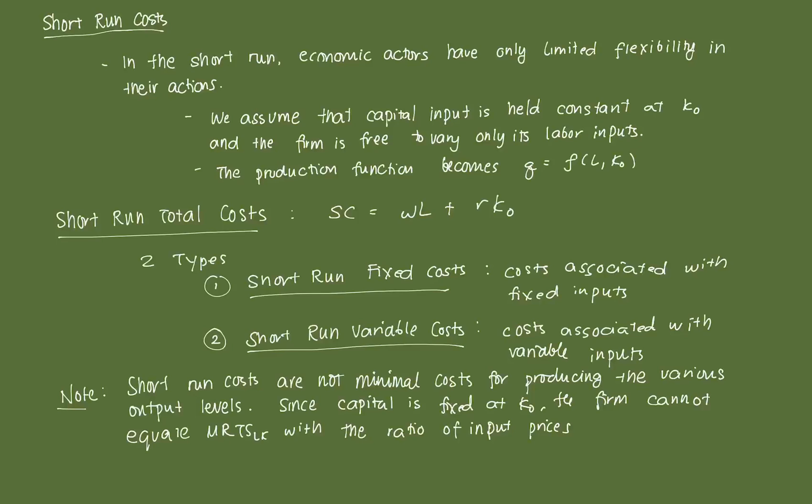The way we introduce that friction between short-run and long-run is that we assume one input in production is fixed. In most textbooks, we assume that the capital input K is held constant at a level K-naught. But the firm is free to vary some inputs. There are inputs that the firm can vary readily, that it can adjust instantaneously over time. But there are also inputs that are fixed in the short-run because the firm doesn't have much leeway to adjust those inputs. In our two-input production function, if capital input is held constant, our production function becomes a function of labor and some fixed level of capital K-naught.